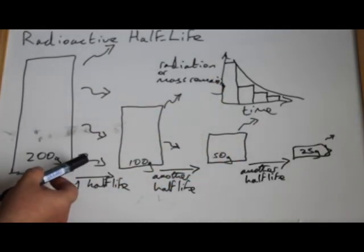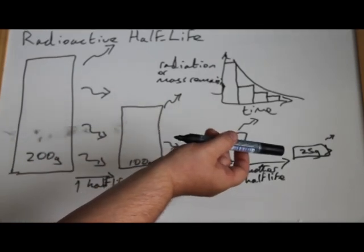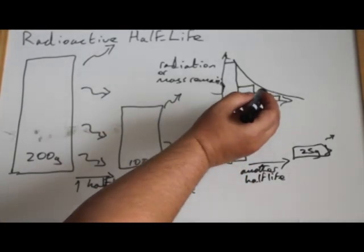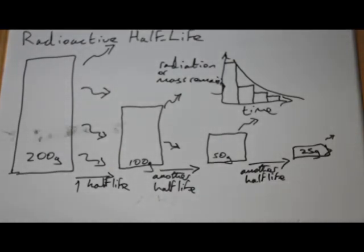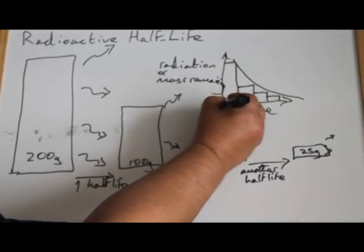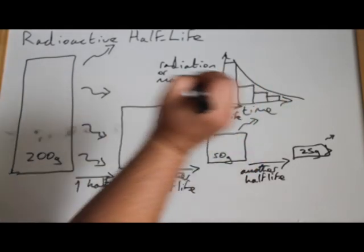Or we started off with four wavy lines of radiation, then two, then one, then a half. But each one of these points where it's halved is a half-life. So if you have a graph of radiation or the mass remaining, then you can find the half-life by the time it takes for the radiation or the mass to halve.